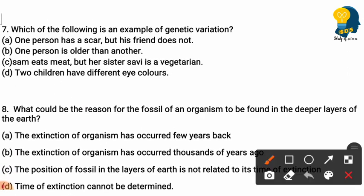The seventh question: which of the following is an example of genetic variation? Looking at the options — one person being older than another is definitely not genetic variation. Sam eats meat but her sister Savi is vegetarian — not related to genetic variation. Two children have different eye colors — you may have black eyeballs and your friend may have brown eyeballs. This difference in eye color is the correct example of genetic variation.